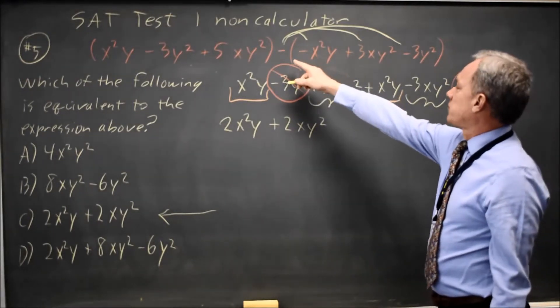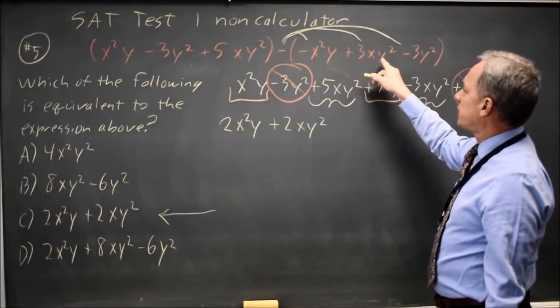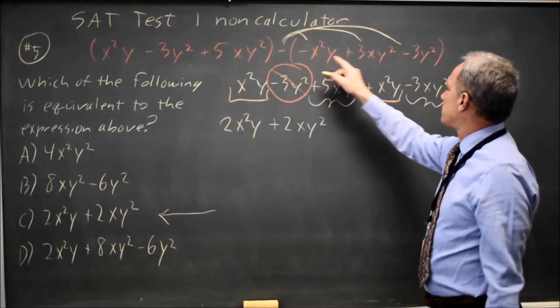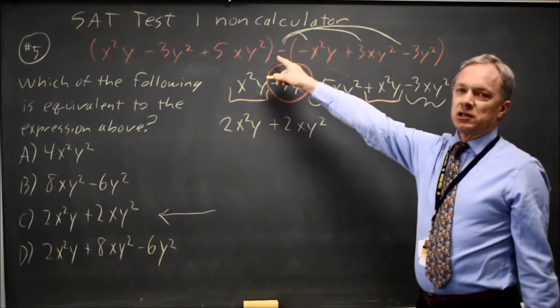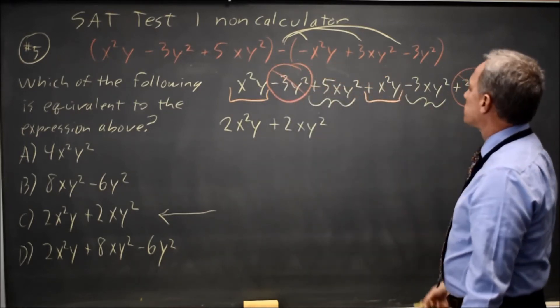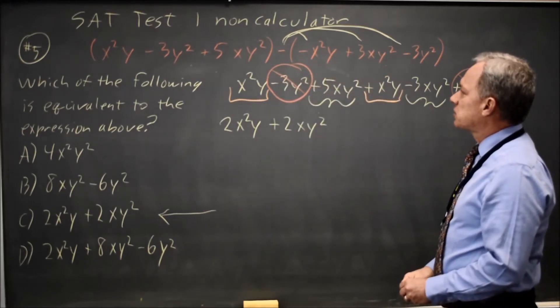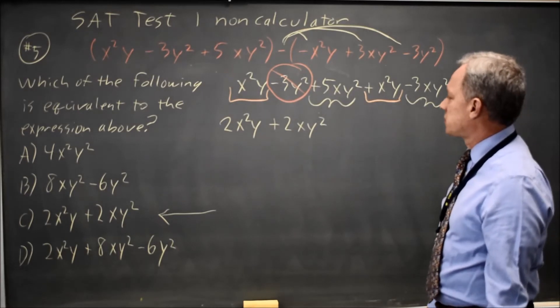The x squared y was negative. The minus makes it positive. The 3xy squared was positive. The minus makes it negative. The negative 3y squared was negative. The subtraction makes that positive. So I distributed the minus correctly. That's my most common error, so I'd like to check for it.